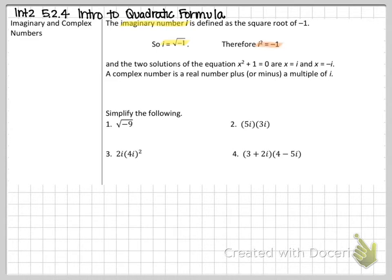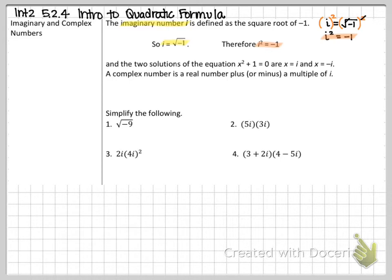So let's work that out. Starting with the definition, we know i is the square root of negative one. Let's go ahead and square both sides. As long as you do it to one side, you get to do it to the other. Now, i squared is just i squared — kind of like x squared. On the right-hand side, the square and the square root cancel each other out, and that's where i squared equals negative one comes from. We've got these two definitions, and it depends on the situation — sometimes i itself is all you need, and sometimes i squared is what you need.